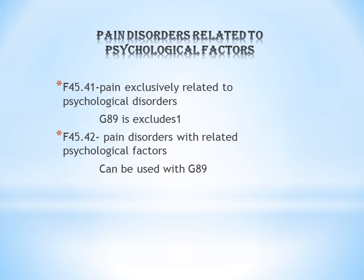Regarding F45.41, G89 is an Excludes 1 note. G89 covers physical pain — the severity, type, whether it is acute or chronic. Because G89 is Excludes 1 for F45.41, when a patient has purely psychological pain and you assign F45.41, you cannot also assign a G89 code.